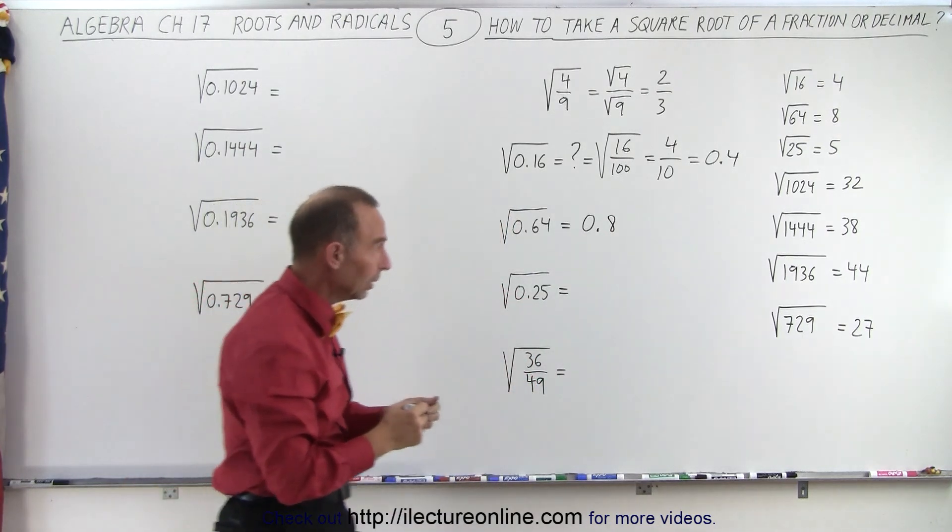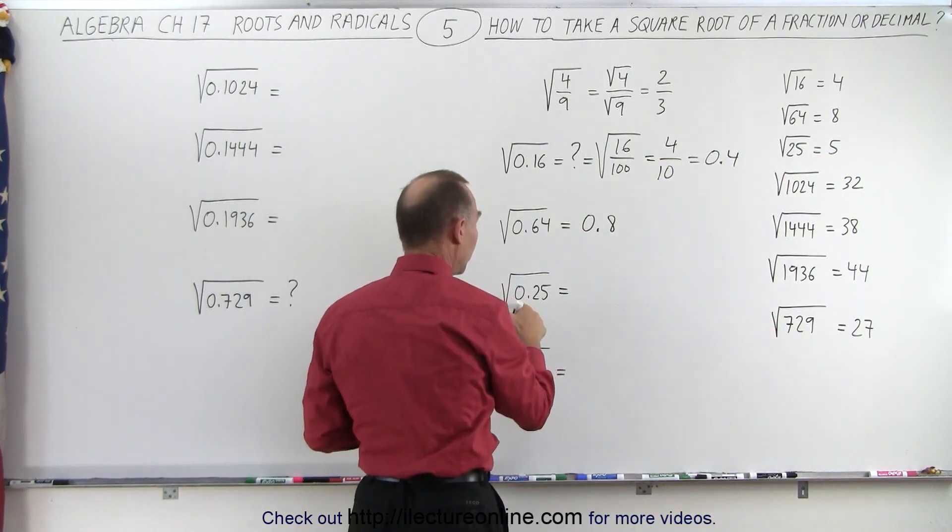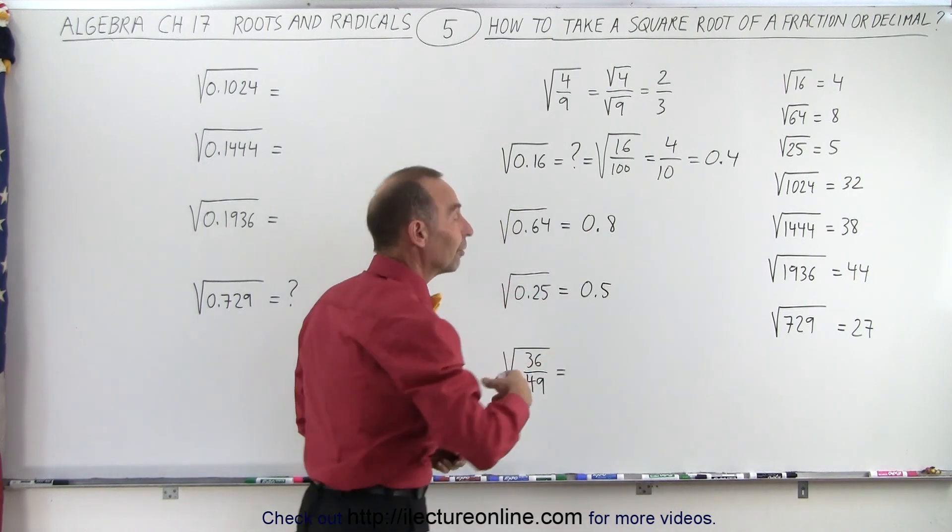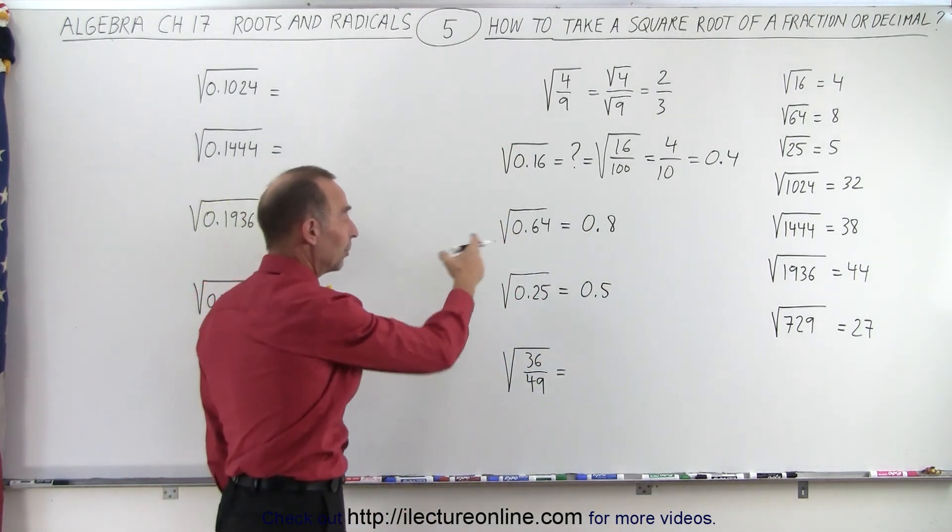Same over here, the square root of 0.25, well, we know that the square root of 25 is 5, so therefore the square root of 0.25 is equal to 0.5. So you can see that you can very quickly find the square root of decimals of familiar numbers like this.